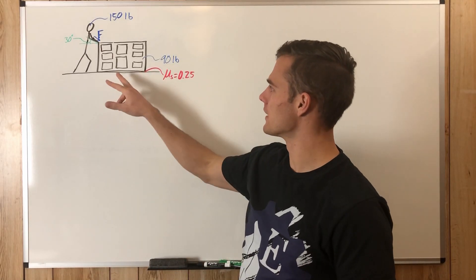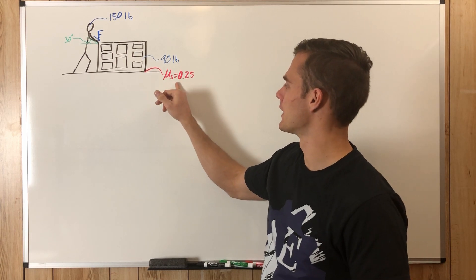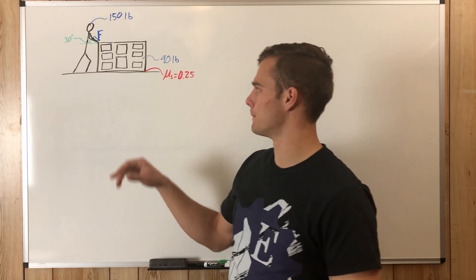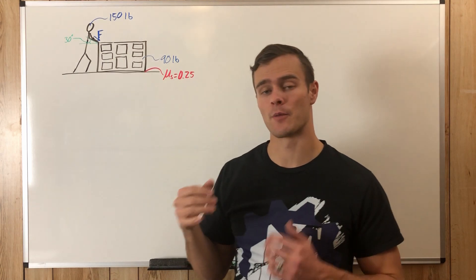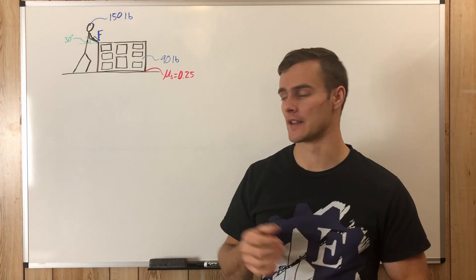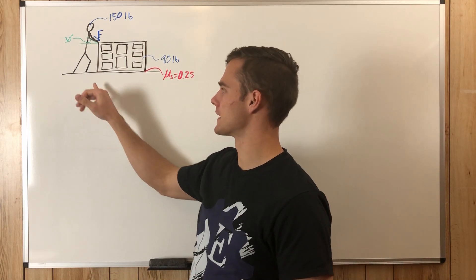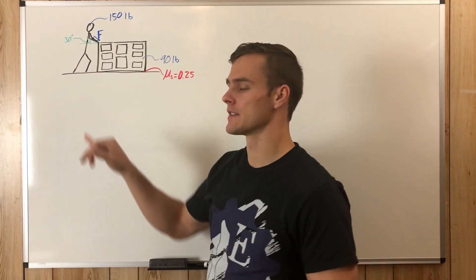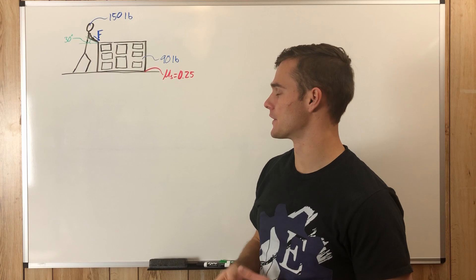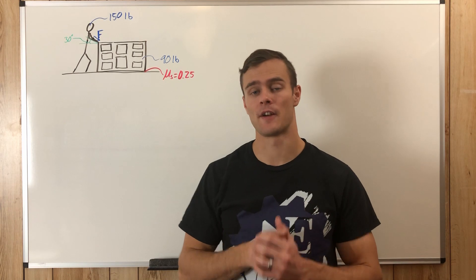We have a man trying to push a dresser. The coefficient of static friction between the dresser and the floor is 0.25, and the dresser weighs 90 pounds. The man is pushing with a force F. We need to find the force F to just barely get this dresser to start to slide, and then find the minimum coefficient of static friction between the man's shoes and the floor to keep him from sliding.